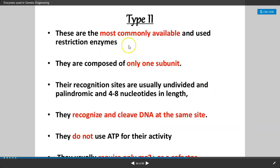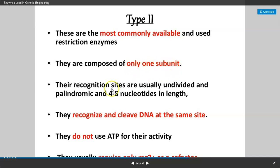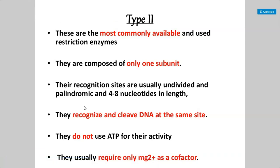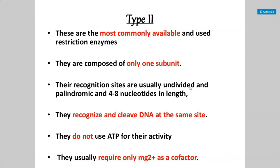Type 2 restriction endonucleases are the most commonly available and most used restriction enzymes in recombinant DNA technology or genetic engineering. These Type 2 enzymes are composed of only one subunit. Their recognition sites are usually undivided and palindromic in nature, with a length of 4 to 8 nucleotides. They recognize and cleave DNA at the same site — within the recognition site itself. They do not use ATP as an energy source, but they require Mg2+ ions as a cofactor for their activity.